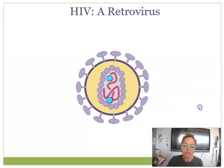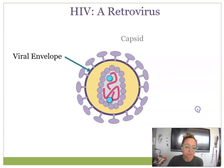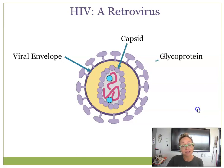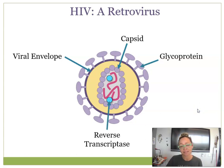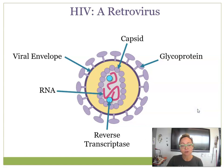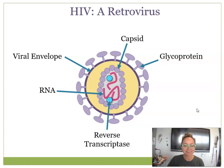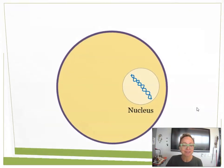Let's look at the structure of this HIV virus. It has a viral envelope that helps it enter the host cell, a capsid made of proteins, glycoproteins, and the enzyme reverse transcriptase, which is really important for viral reproduction. Retroviruses are RNA viruses, though not all RNA viruses are retroviruses.